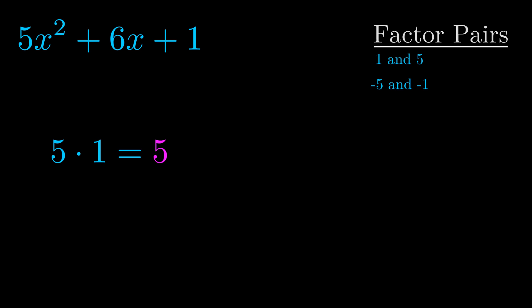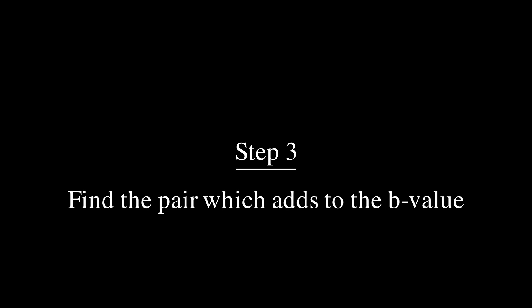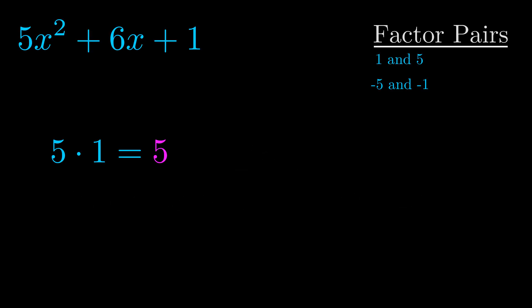Now once you have these factor pairs the goal is to find which of these pairs adds to the b value. The b value is the coefficient on the x term. That's the middle term, the one that we haven't done anything with yet.